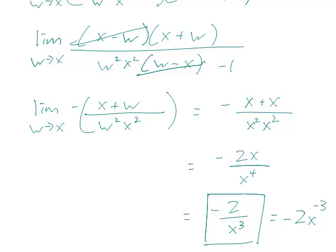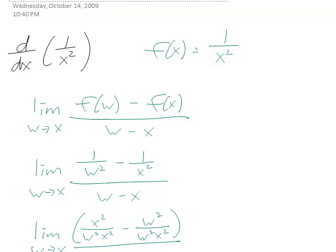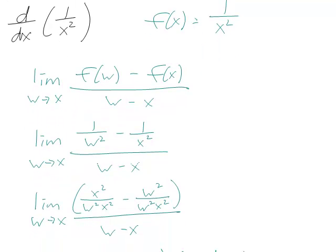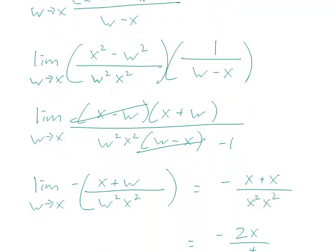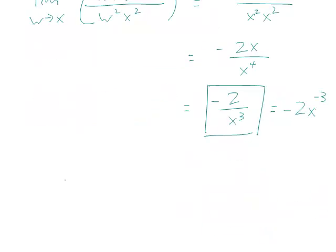And this one could be done also with the other definition, which is the limit as h approaches 0 of f of x plus h minus f of x over h. But I find this way a little easier. It's really personal preference, because in both cases, you end up doing the same thing. But this one looks a little more symmetrical.